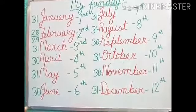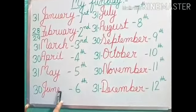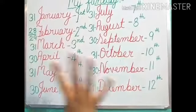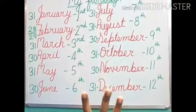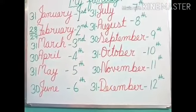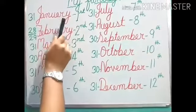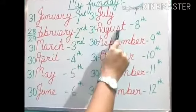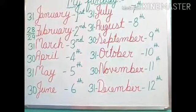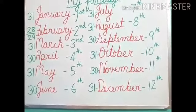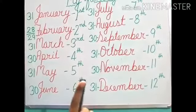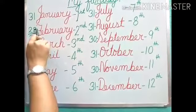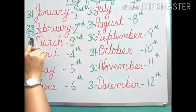How many months have 30 days? Let us count — 1, 2, 3, 4. Total 4 months have 30 days. And how many months have 31 days? Let us count — 1, 2, 3, 4, 5, 6, 7. Total 7 months have 31 days. And only one month is the shortest month — that is February, with either 28 or 29 days.